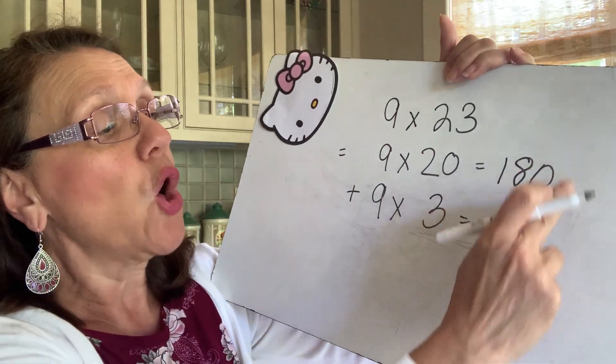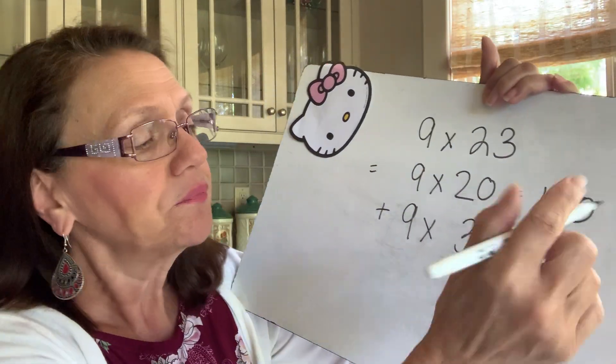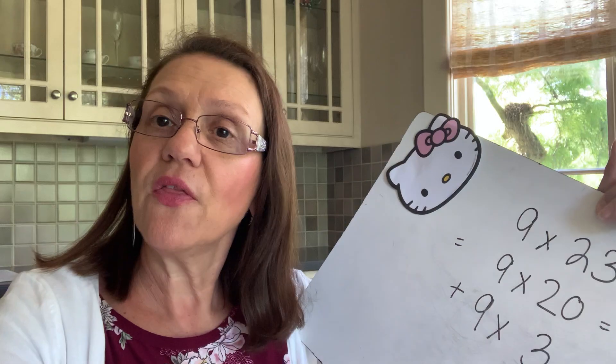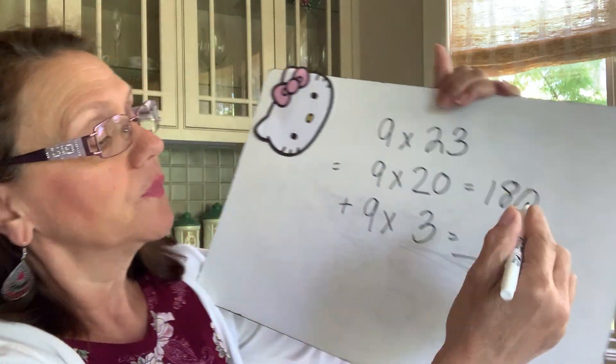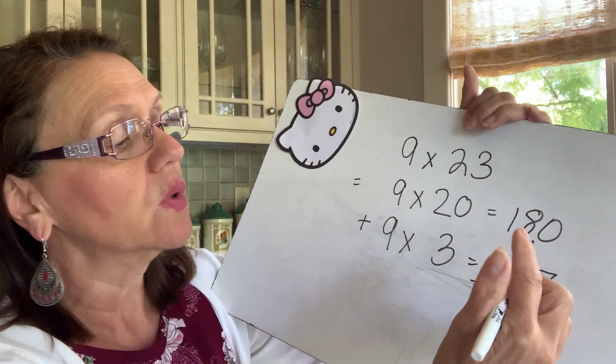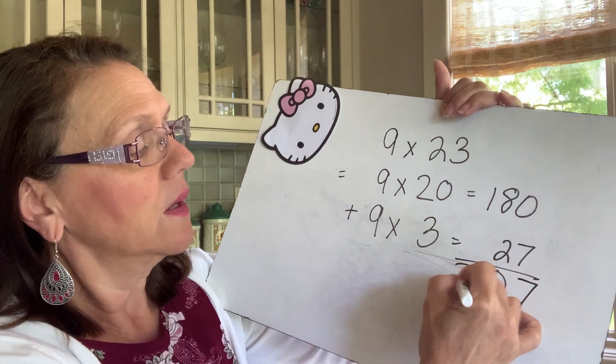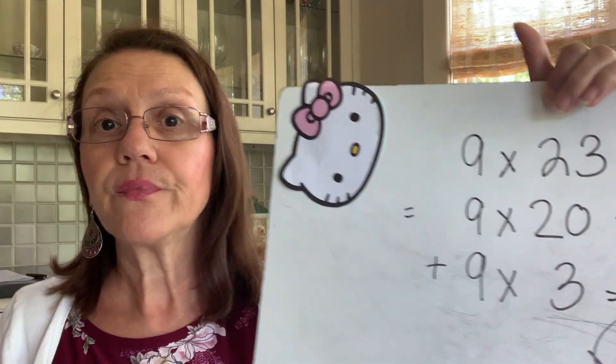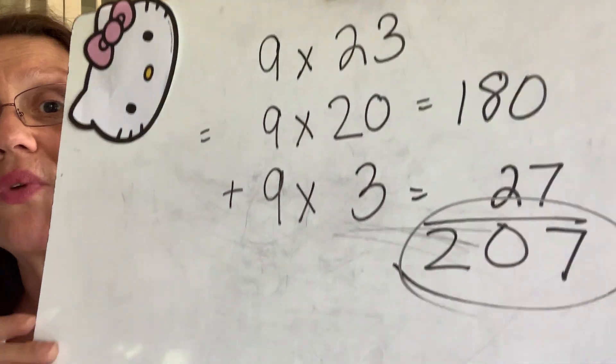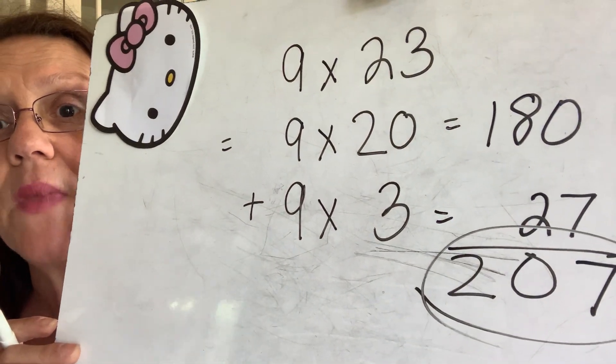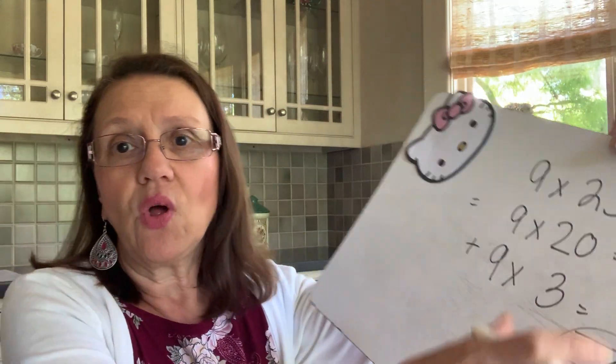These are called partial products. When we add them together, we'll get the full product or the answer to the multiplication question. So 9 times 23 is 207. When you get really good at this, you won't have to write down all these steps. You'll be able to do it in your head and get the answer. That's called mentally calculating.